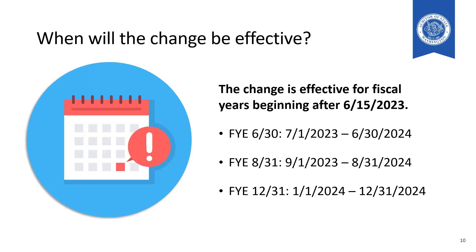When will the change be effective? For most local governments in Washington State with a fiscal year end of December 31st, this change is effective for fiscal year January 1st, 2024 through December 31st, 2024. For governments with a fiscal year end of June 30th or August 31st, the applicable effective dates are listed on screen.